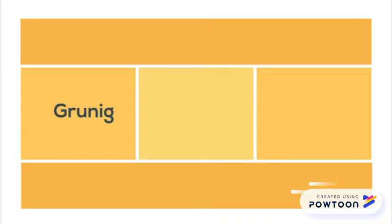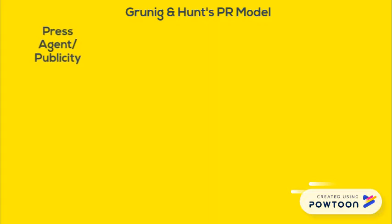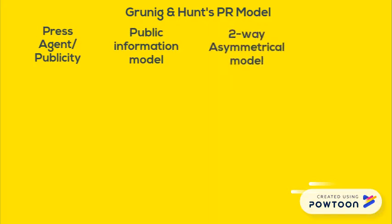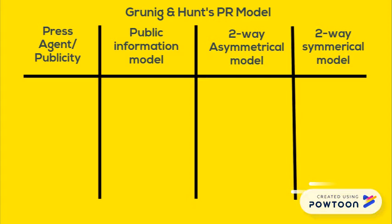Next, we will start to discover Grunig and Hunt's model in PR. The Grunig and Hunt model includes four models: the press agent, public information, two-way asymmetrical model, and two-way symmetrical model. The press agent model is about propaganda, one-way communication, and manipulating the audience.